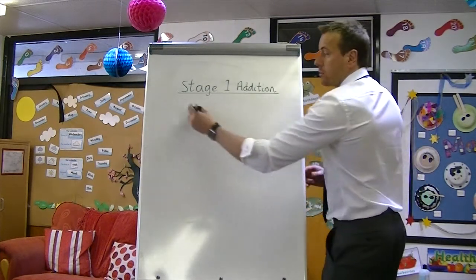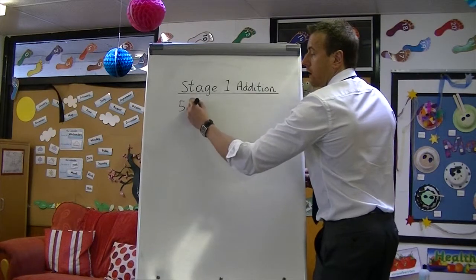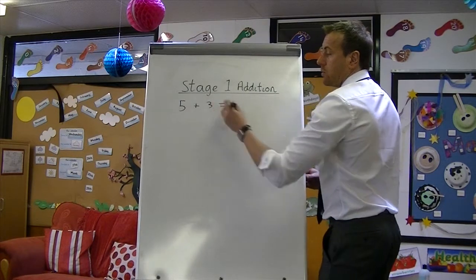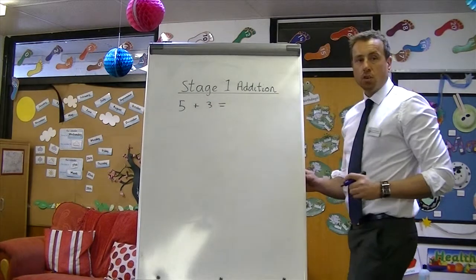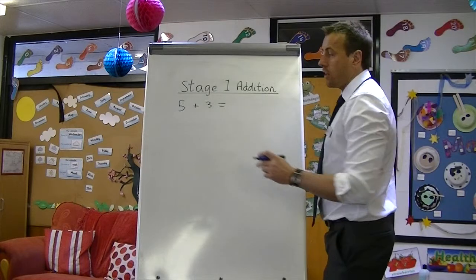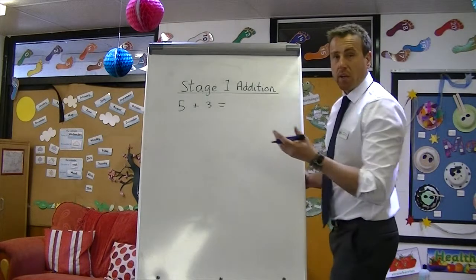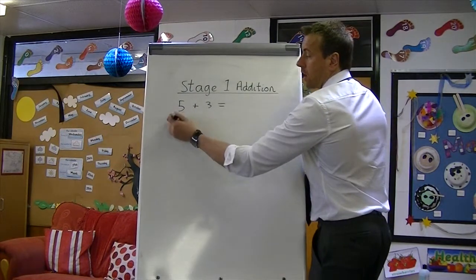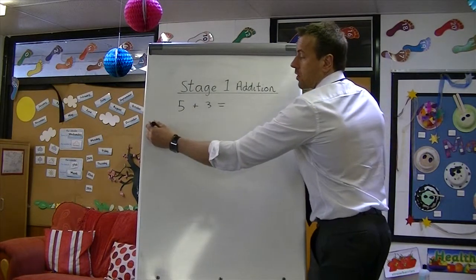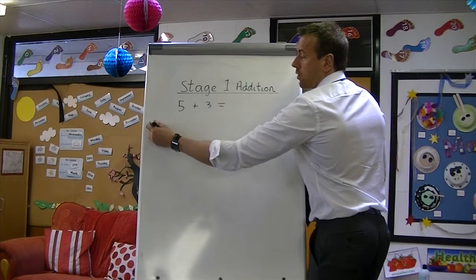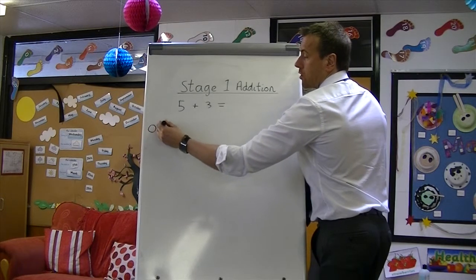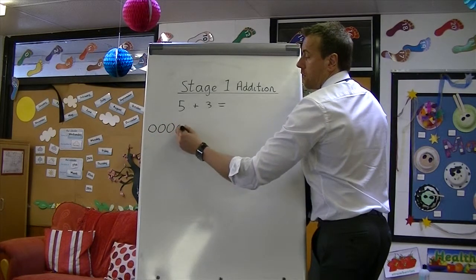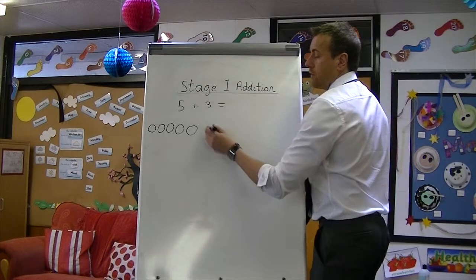So if I do the number sentence for 5, add it to 3, equals. Children would start by drawing objects — we'll just do circles. So 5 circles: 1, 2, 3, 4, 5.